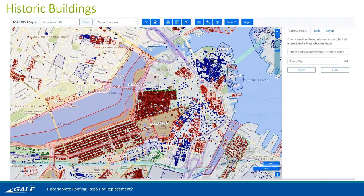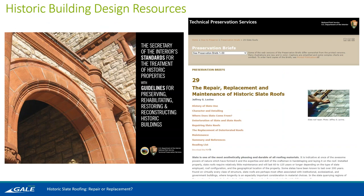Two documents are very important as you start to think about a repair or replacement project. The first is the Secretary of the Interior Standards for the Treatment of Historic Properties, put out by the National Park Service. This document is really important because typically if you receive any kind of federal funding — whether grants or tax incentives — you may be required to follow these guidelines. Depending on the profile of your building, you might even be assigned someone from the National Park Service to make sure you're adhering to these guidelines. They tend to be really general and don't get into the nitty-gritty of how repair should be performed for individual systems — they're more of a best general practice.